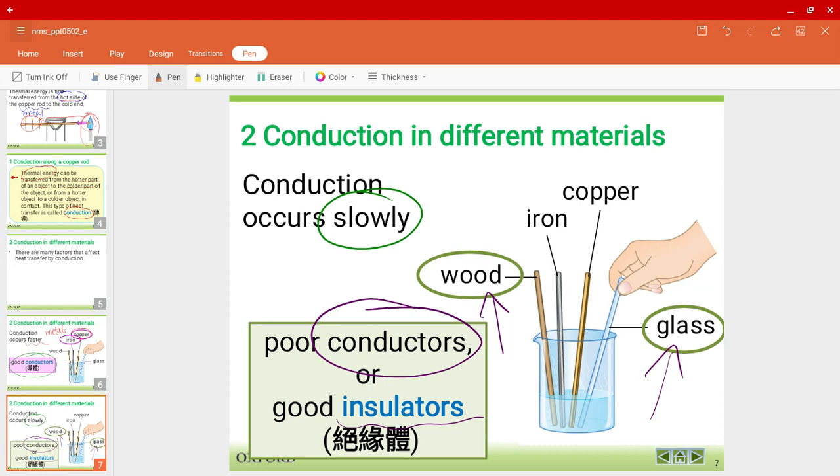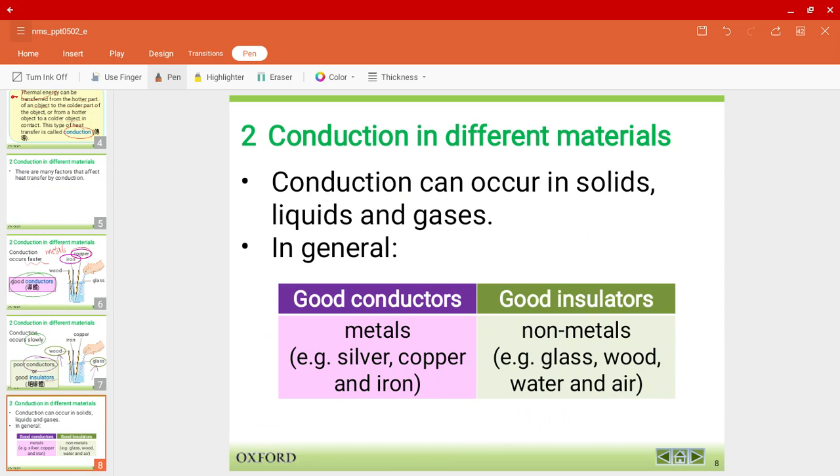Before that, let's summarize this so far. Conduction actually occurs in solids, liquids, and gases. In general, as I've told you, good conductors are metals. Good insulators are non-metals. For example, glass, wood, water, air, and so on and so forth.